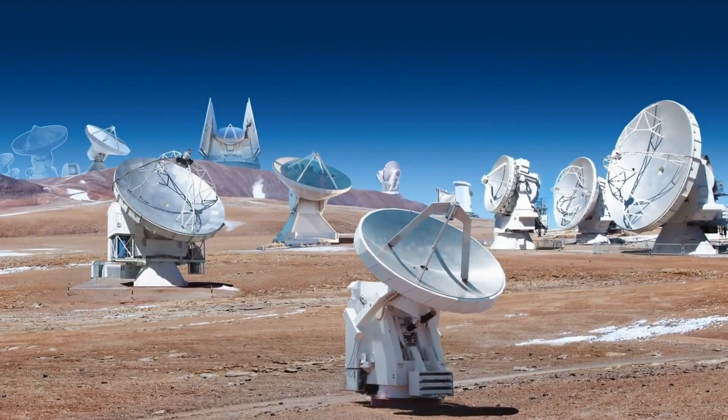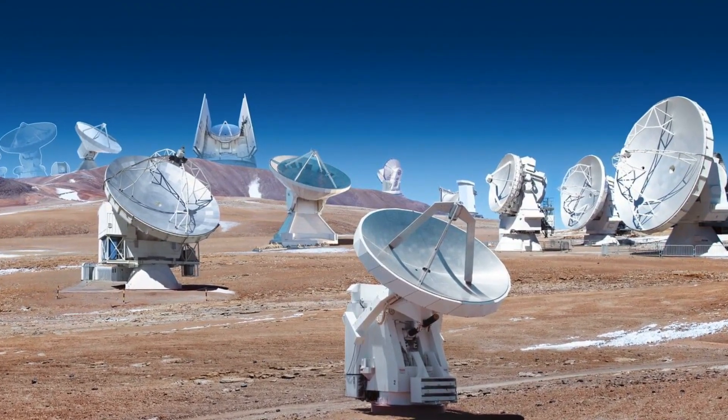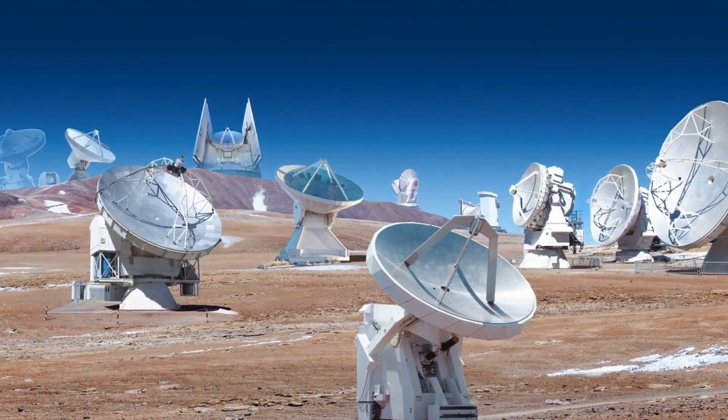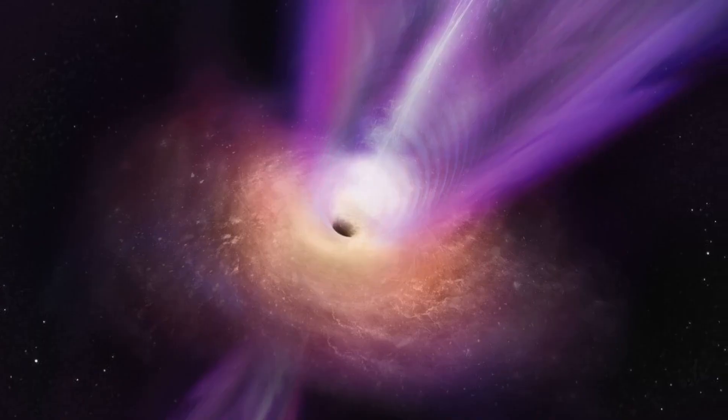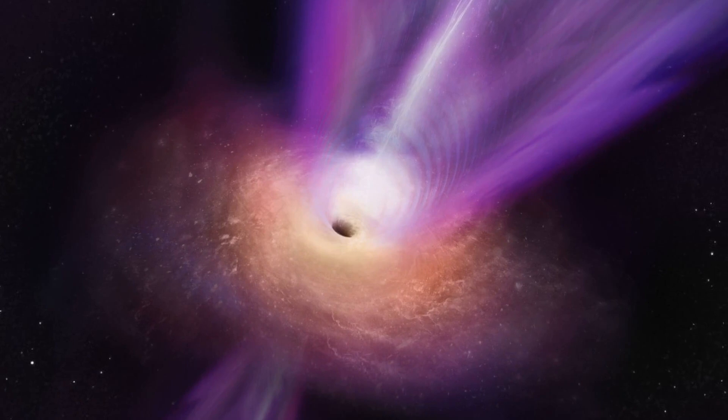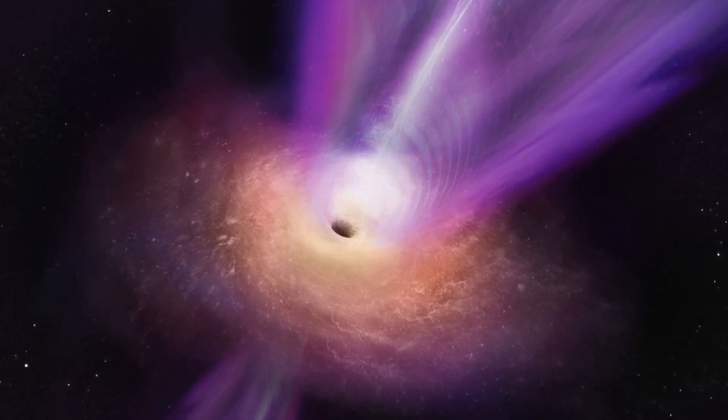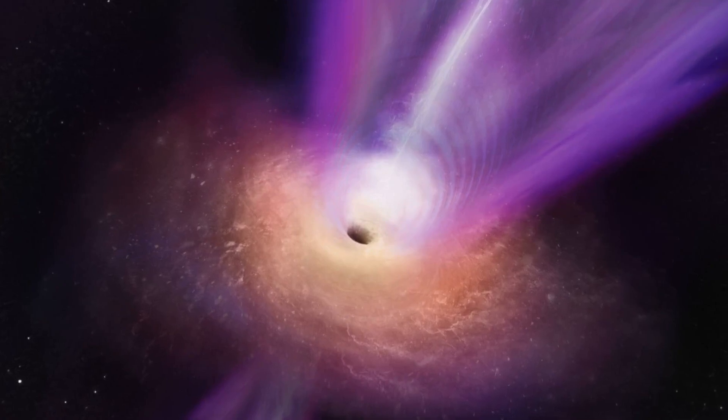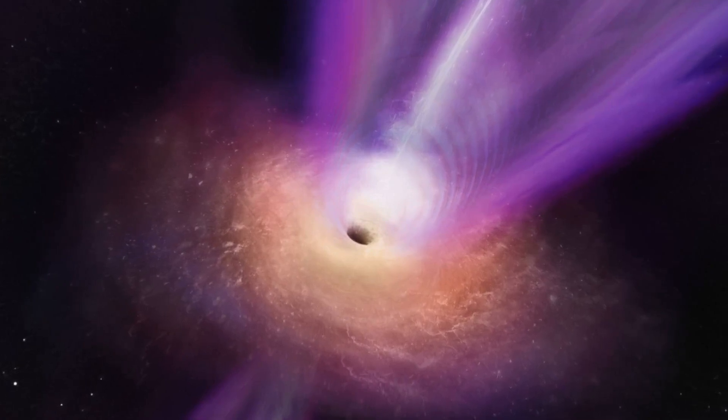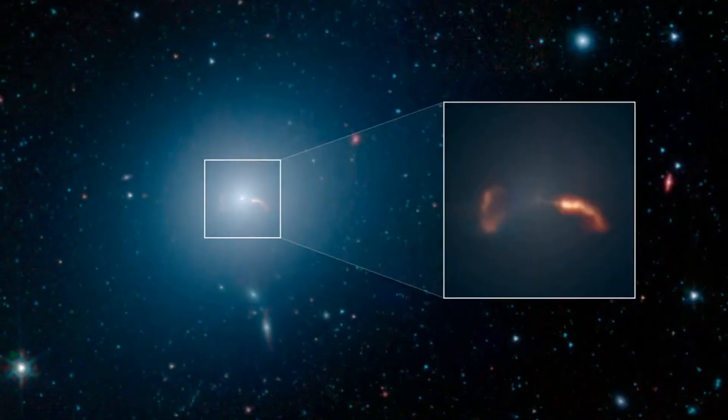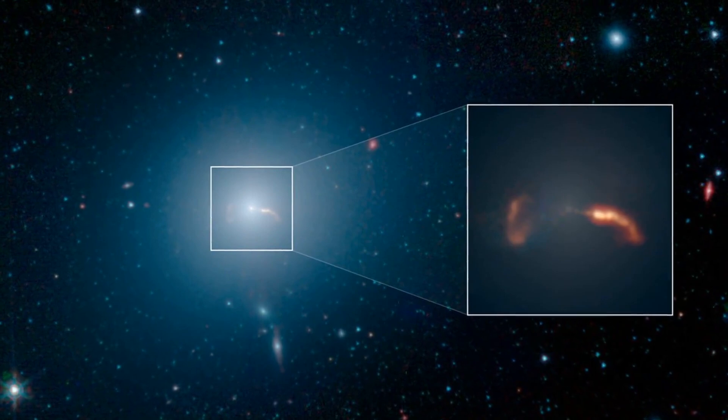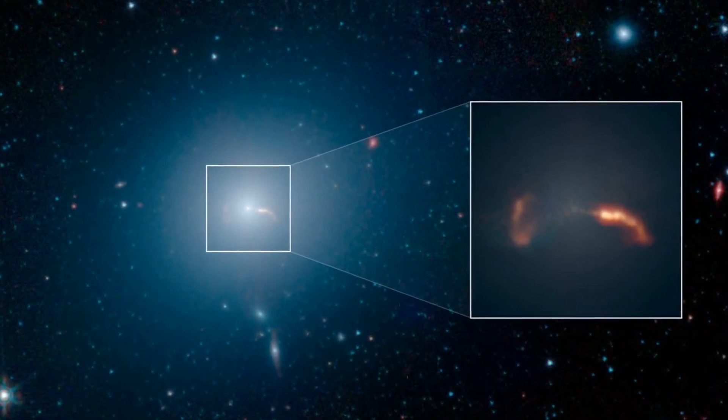The first image of a black hole was unveiled in 2019, thanks to the work of the Event Horizon Telescope EHT team. This remarkable achievement was accomplished by observing the black hole located at the heart of the M87 galaxy, focusing on the event horizon, the point where nothing, neither matter nor energy, can escape its gravity. This image portrays the rapid annihilation of light particles or photons, providing an unprecedented view of the phenomenon.